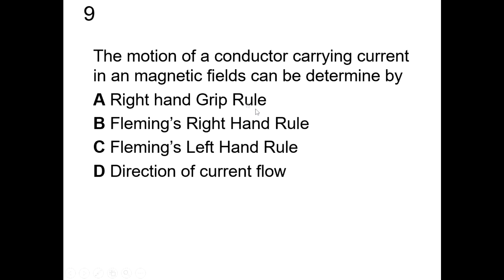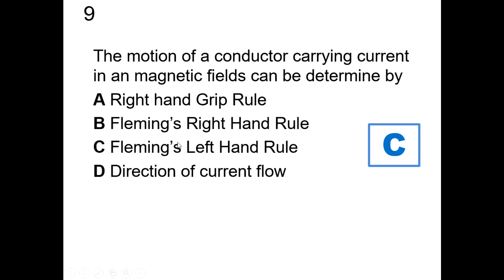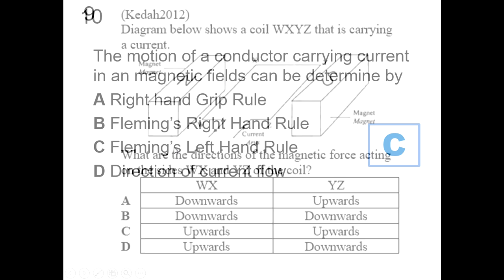Question 9: the motion of a conductor carrying current in a magnetic field can be determined by Fleming's left-hand rule. Be careful with the spelling — make sure you spell it correctly: F-L-E-M-I-N-G apostrophe S left hand rule.